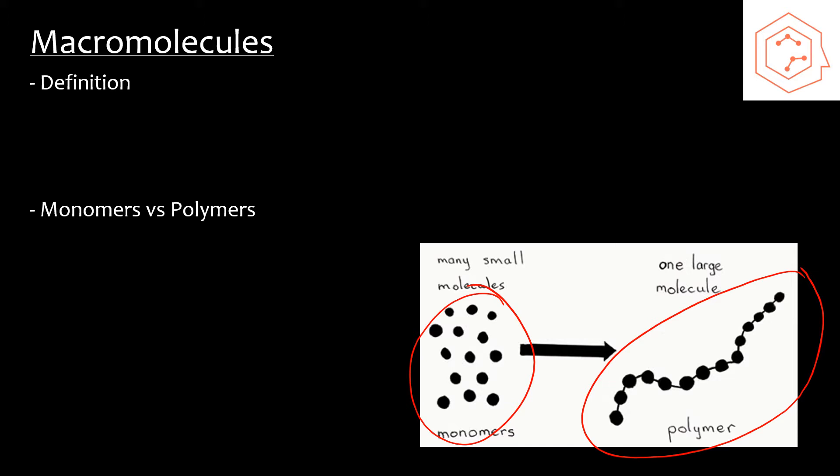Macromolecules can be broken or formed through hydrolysis and condensation reactions respectively. As we're forming a molecule that would be a condensation reaction, but as we break down the macromolecules, that is a hydrolysis reaction.